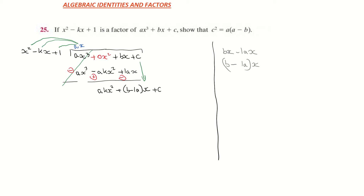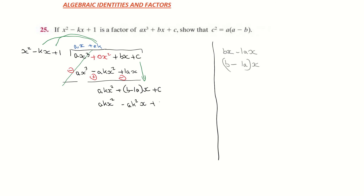I divide again: x squared into akx squared — the x squared cancels, leaving plus ak on top. I multiply ak back down: ak times x squared gives akx squared; ak times minus kx gives minus ak squared x; and ak times 1 gives plus ak.